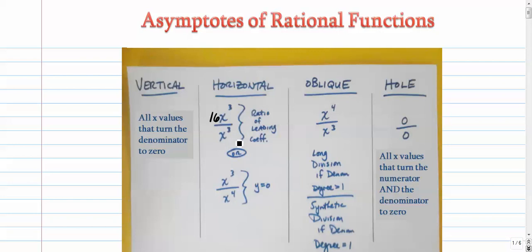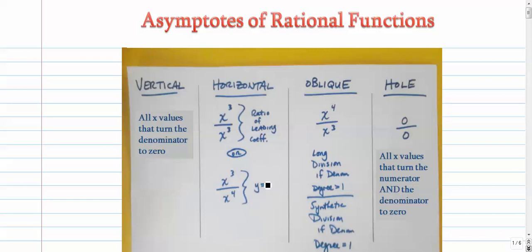If the degree is higher on the bottom, it doesn't matter if it's one degree higher or a lot higher. No matter what the situation is, if the numerator degree is smaller than the denominator degree, then your horizontal asymptote is y equals 0 — basically the x-axis.